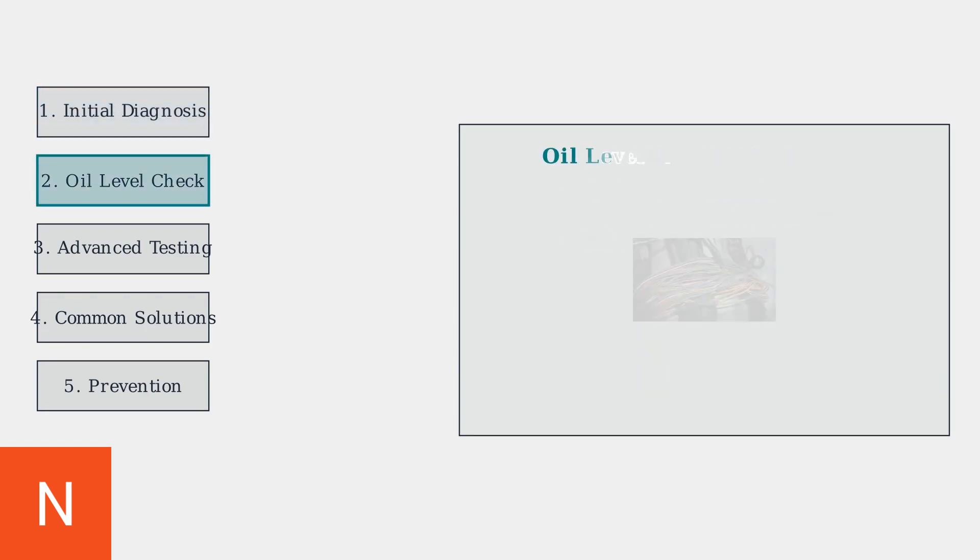Step two is checking oil level and condition. Many P000B codes are caused by low oil level or dirty oil affecting the variable valve timing system.